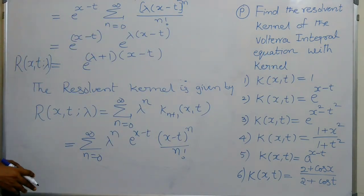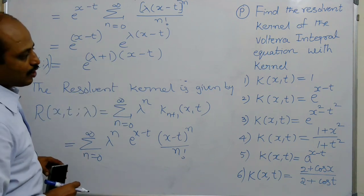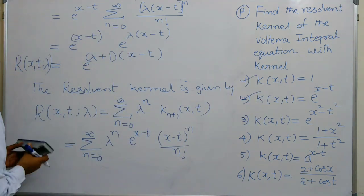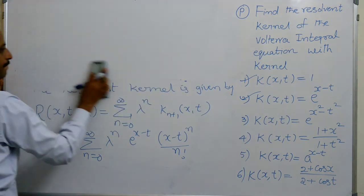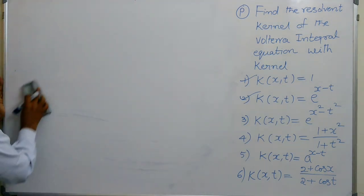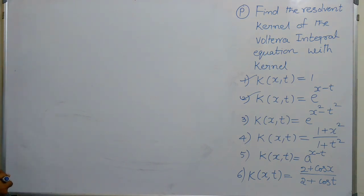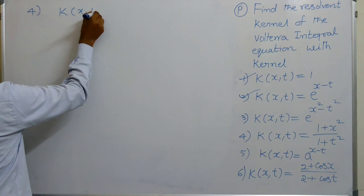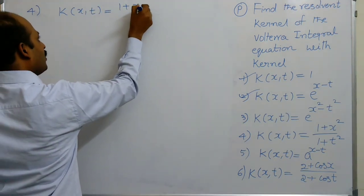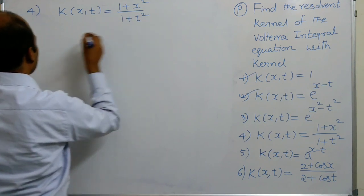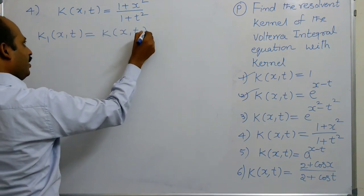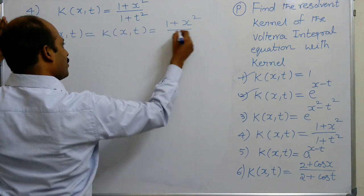As you observe the procedure, let us solve the third problem. K of X, T equals (1 + x²) / (1 + t²).